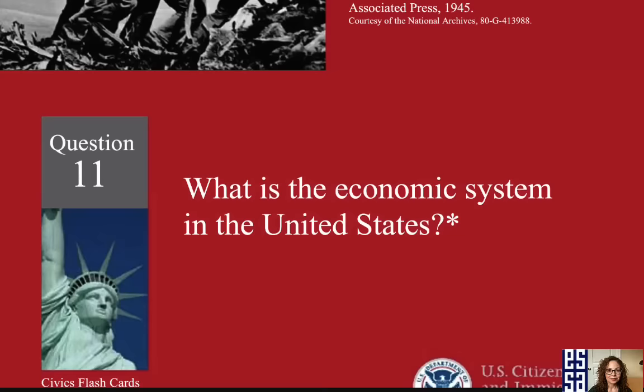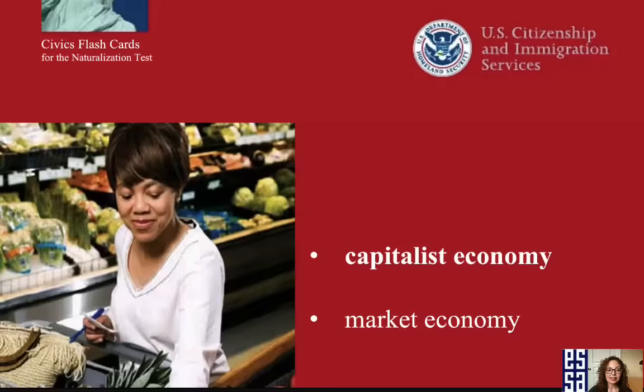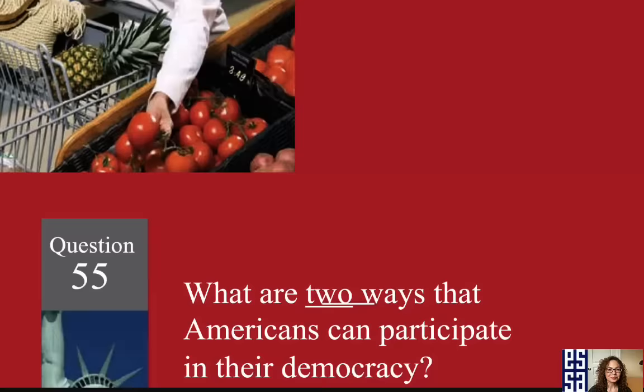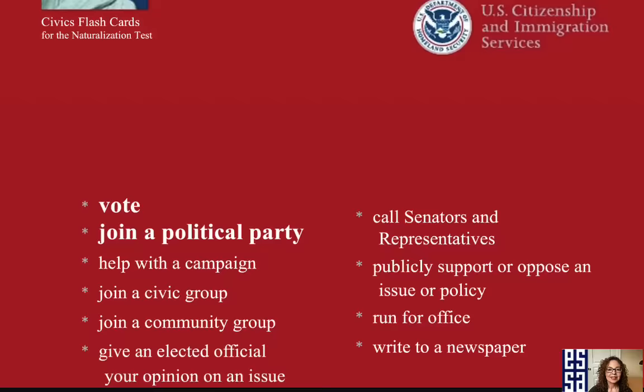What is the economic system in the United States? A capitalist economy — some people find market economy easier to pronounce, so either one is correct. What are two ways that Americans can participate in their democracy? To vote and join a political party.